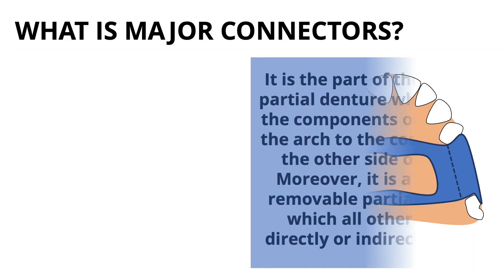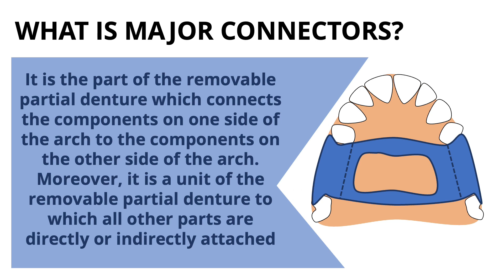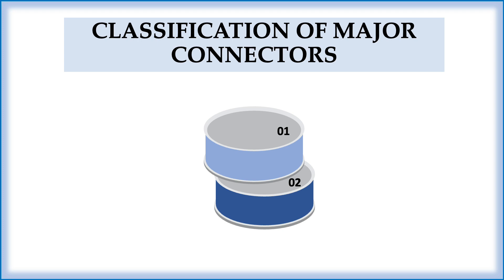A major connector is a part of a removable partial denture which connects the components on one side of the arch to the components on the other side of the arch, as you can see in the figure. Moreover, it is a unit of the removable partial denture to which all other parts are directly or indirectly attached.